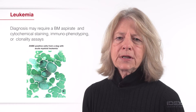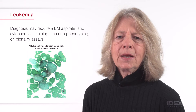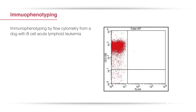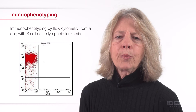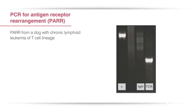Immunophenotyping by flow cytometry may be more sensitive and specific in classifying neoplastic hematopoietic cells, as shown in this dog with acute lymphoid leukemia. Information about clonality from DNA-based testing, such as polymerase chain reaction for antigen receptor rearrangement, or PAR, also may be helpful, as shown in this dog with chronic lymphoid leukemia.